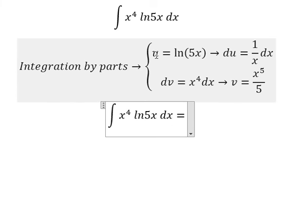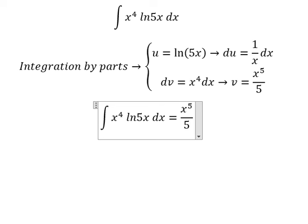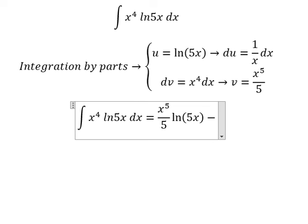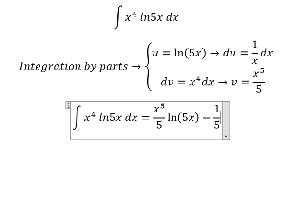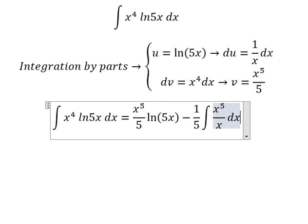So you got u multiplied by v, which is x to the power of 5 over 5 multiplied by ln of 5x, minus du multiplied by v. You got 1 over 5 and we have the integration: x to the power of 5 over x dx.